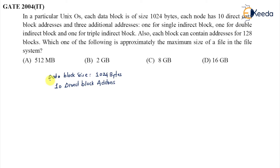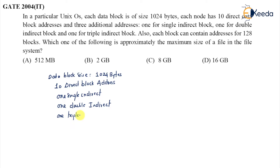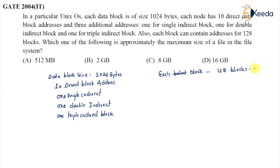The inode also has one single indirect, one double indirect, and one triple indirect pointer. Each block can contain the address of 128 blocks, which means there are 2 to the power 7 entries.